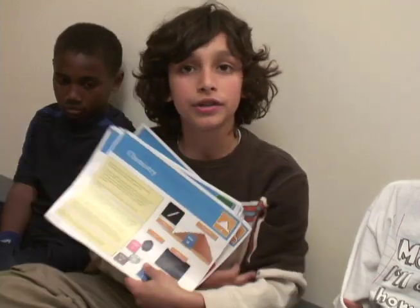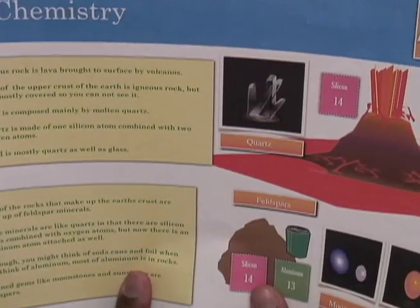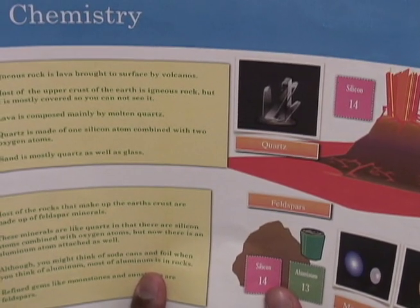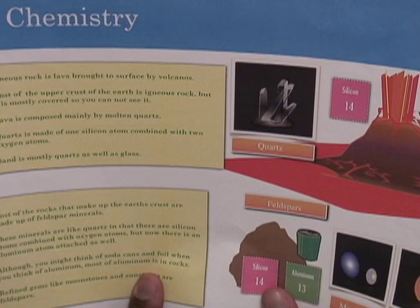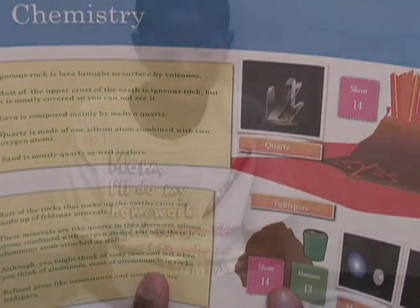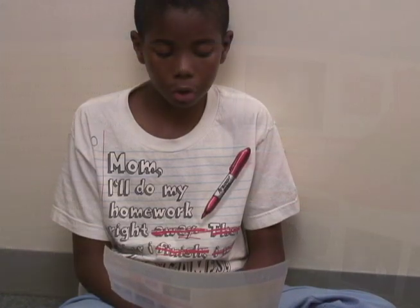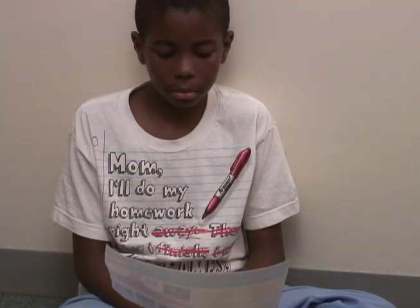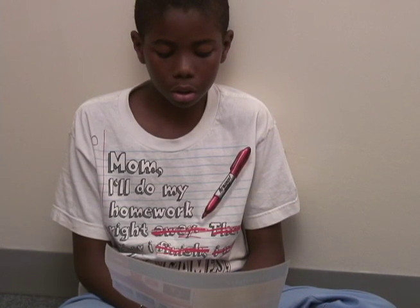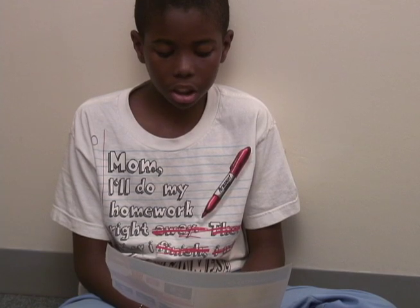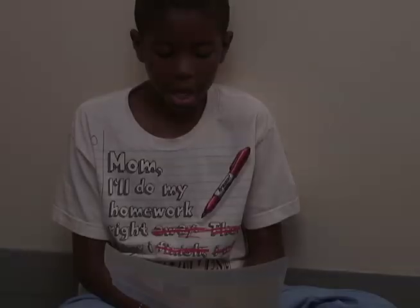We begin the periodic table material by first reading about the different elements. Igneous rock is lava brought to the surface by volcanoes. Most of the upper crust of the earth is igneous rock, but it is mostly covered so you cannot see it. Lava is composed mainly of molten quartz. Quartz is made of one silicon atom combined with two oxygen atoms.